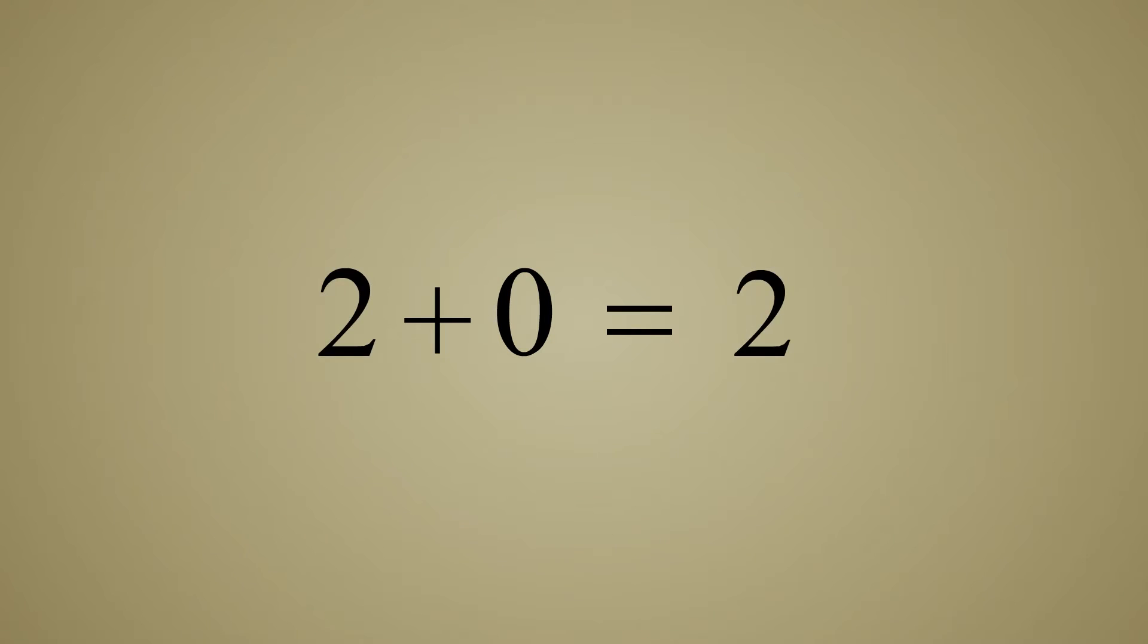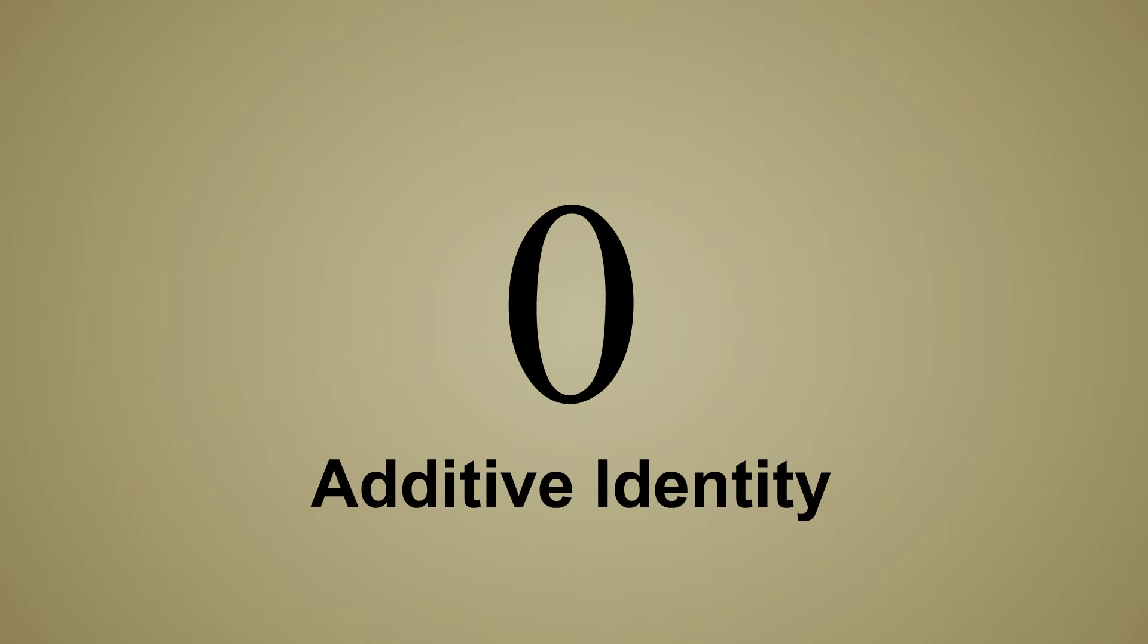In mathematics, an identity element is a number that leaves the value of something unchanged when a particular mathematical operation is performed. So, zero is known as the additive identity.